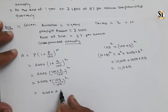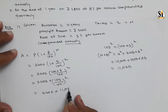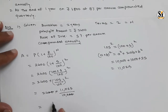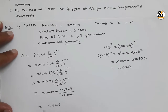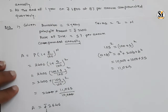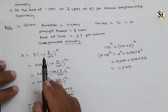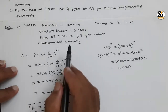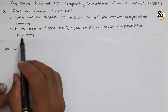So put this in: 2400 × 11,025 / 10,000. The two zeros cancel - we take 24 × 11,025 and divide by 100, which gives rupees 2,646. That is the total amount to be paid. The principal amount is 2,400 and the total amount is 2,646. The total amount is always greater than the principal when there is interest.